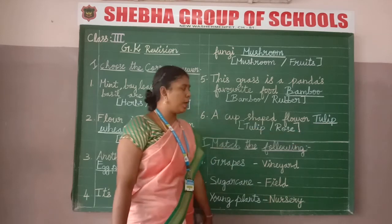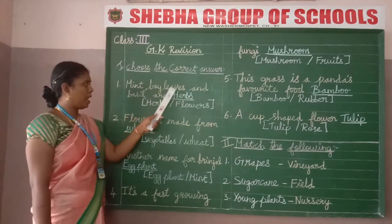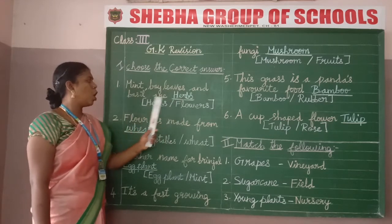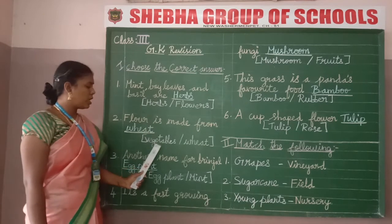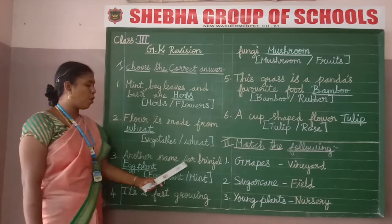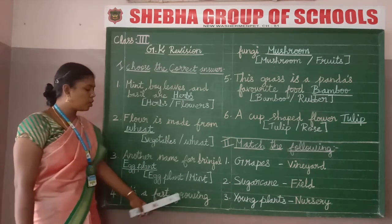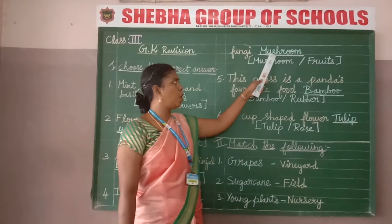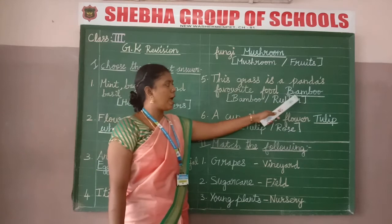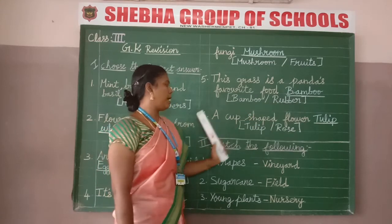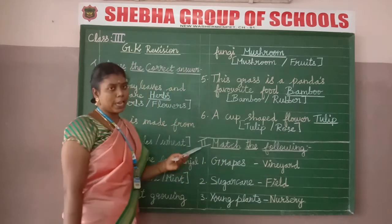Let me read the questions again for Section 1. Number 1: mint, bay leaves and basil — herbs. Number 2: flour is made from — wheat. Number 3: another name for brinjal — eggplant. Number 4: fast-growing fungi — mushroom. Number 5: panda's favourite food — bamboo.